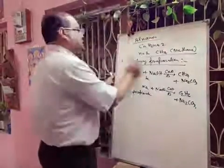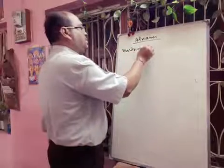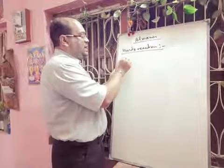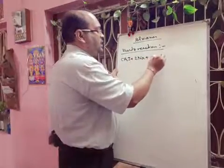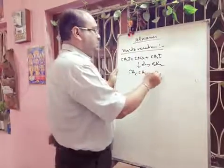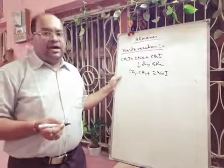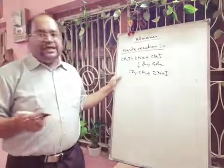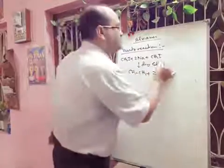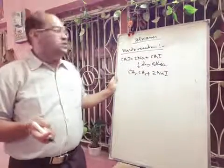Next we will discuss one more important reaction: the Wurtz reaction. In the Wurtz reaction, we take an alkyl halide — for example, methyl iodide — and heat it with sodium metal using dry ether as solvent. Then we get ethane, and there is formation of NaI. This method is very good for preparation of even-numbered alkanes. If you want to prepare unsymmetrical alkanes, there will be a mixture of compounds that is very difficult to separate by gas chromatography, so generally this is not done.